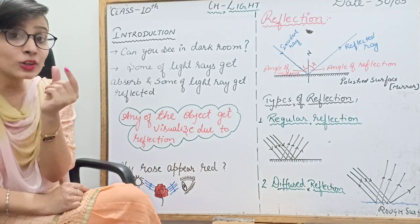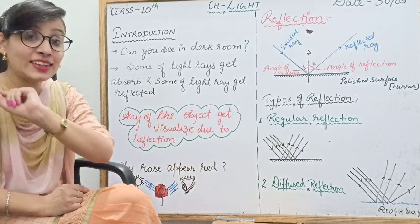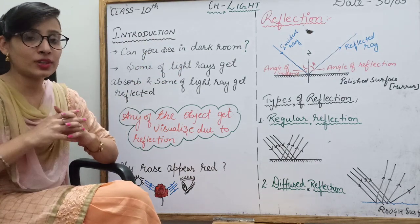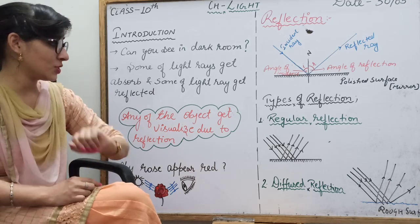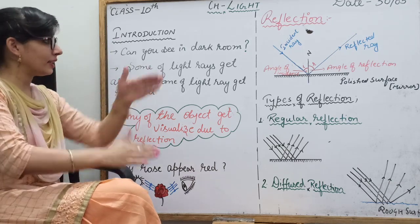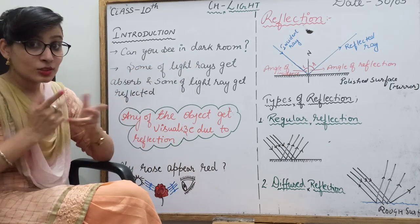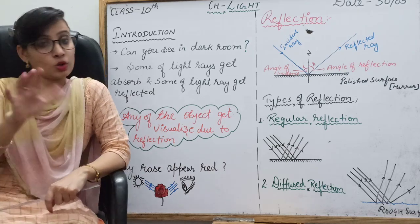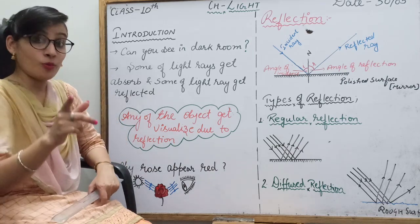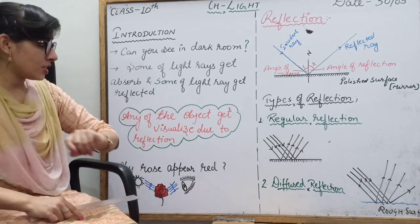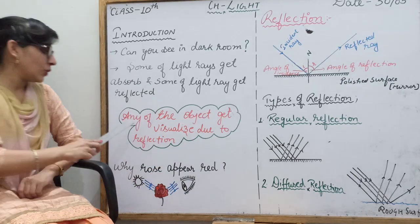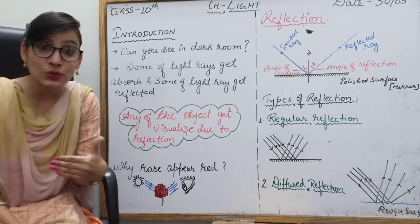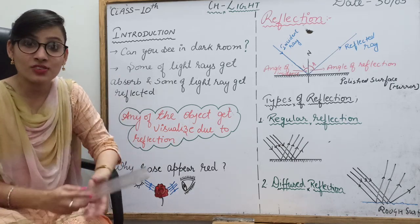In the eye, there is a part called the retina, where the image is formed. This chapter will also cover the eye, where we will study the retina in depth. So now — can you see in a dark room? No. Why? Because of the absence of light. Any object gets visualized to us because of light rays. Light is a form of energy.